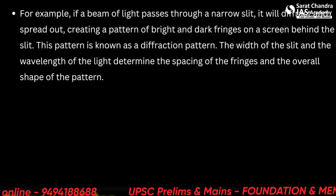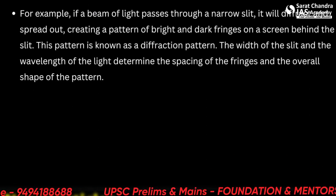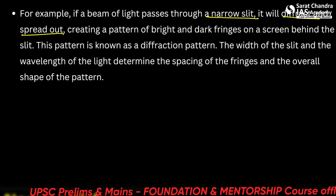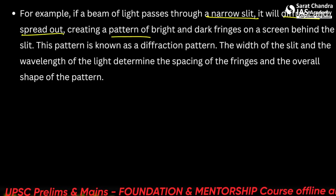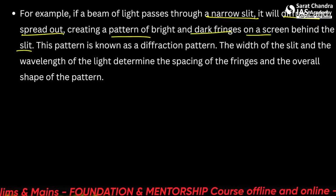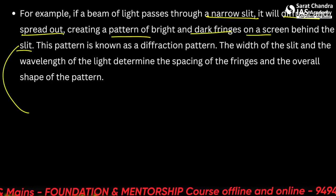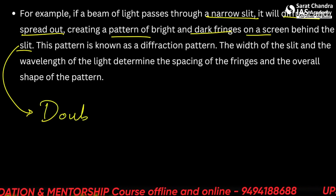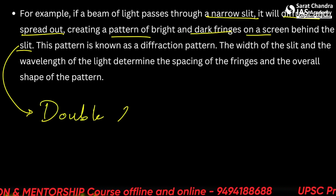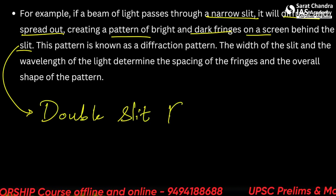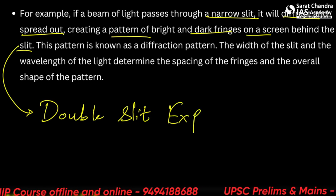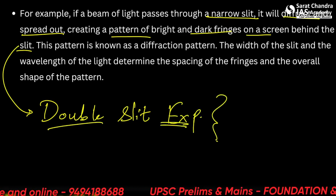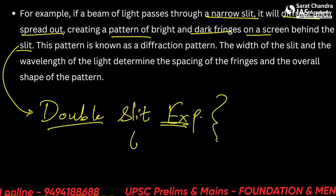For example, if a beam of light passes through a narrow slit, it will diffract and spread out, creating a pattern of bright and dark fringes on the screen behind the slit. This is known as the slit or double slit experiment — a part of physics you can read about separately. When reading basic science and technology for UPSC, the width of the slit and the wavelength of the light determine the extent of the diffraction.